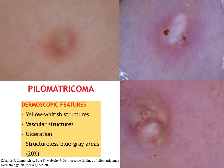Regarding pilomatrichoma, the most frequently found dermoscopic features are yellow-whitish structures with no specific vascular pattern, and less commonly structureless blue-grey areas and ulcerations.